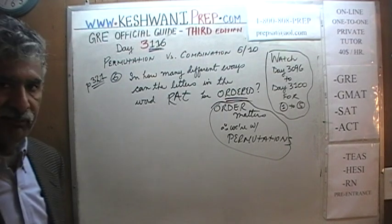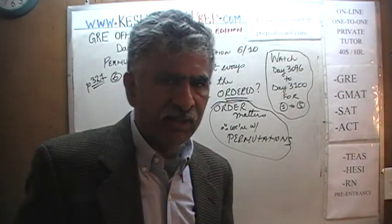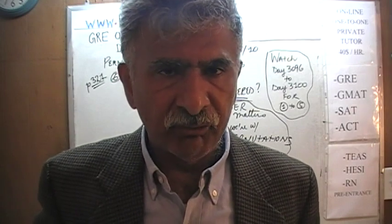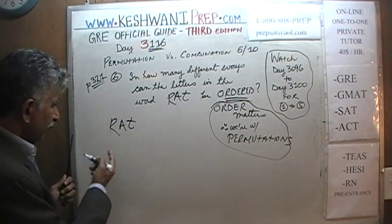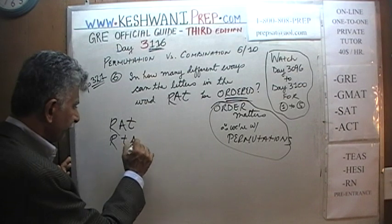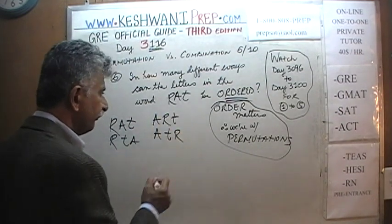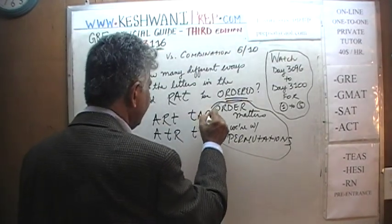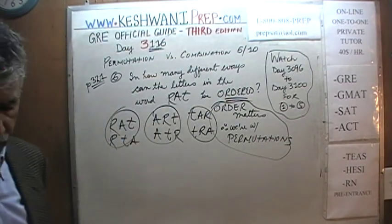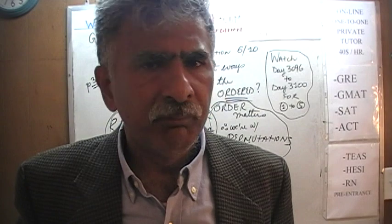How many different permutations are possible if you have three objects — R, A, and T? Think of this as three people: Richard, Anthony, and Thomas, deciding how many different ways they can be assigned the jobs of president, vice president, and treasurer. We can enumerate all arrangements: RAT, RTA, ART, ATR, TRA, TAR. As you can see, there are six different possibilities. But we don't actually have to enumerate them, especially for STUDY with five letters — that would take forever.